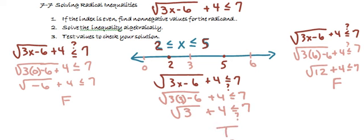Therefore, we do confirm that this finding, the interval between 2 and 5, results in a true. It is, therefore, the solution to our inequality.